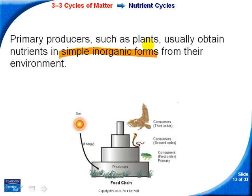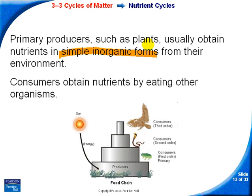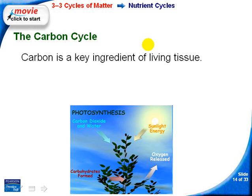Plants pick up their nutrients from the environment through the soil and through photosynthesis, where materials are incorporated into living tissue. Consumers get their nutrients by eating other consumers — they don't get them from the soil or from the atmosphere. The first nutrient we'll look at is carbon, which is the key ingredient of living tissue.